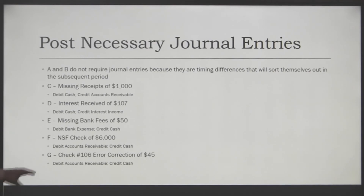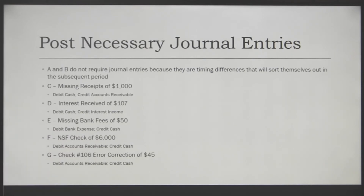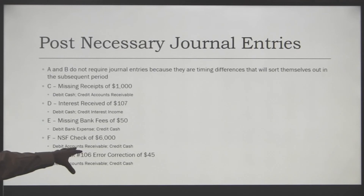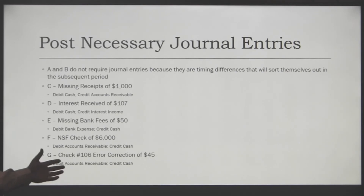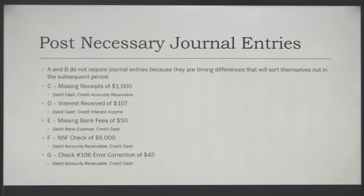For item E, the missing bank fees of $50: increase bank expense on the income statement and subtract $50 from the cash account on the balance sheet. For item F, the non-sufficient funds check of $6,000: reduce accounts receivable on the balance sheet by $6,000, reduce cash by $6,000, and probably send out another invoice. For item G, check number 106 — the error correction of $45: increase accounts payable by $45 and reduce cash by $45 on the balance sheet.